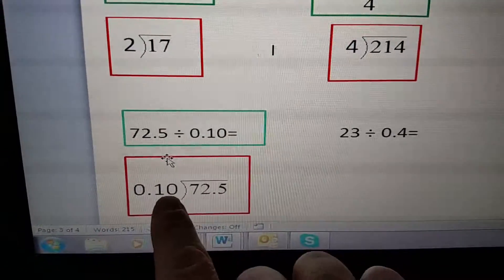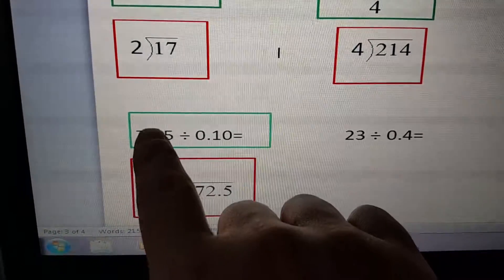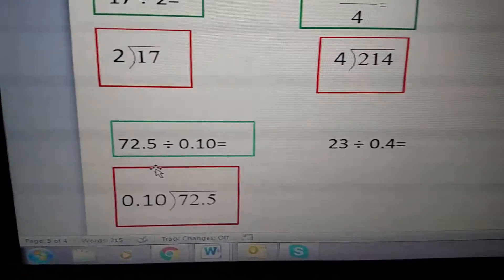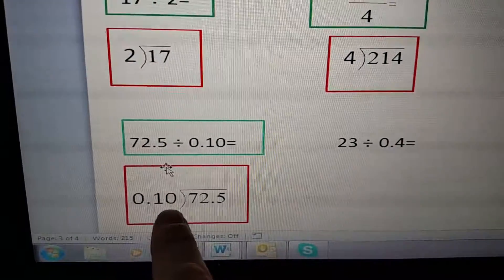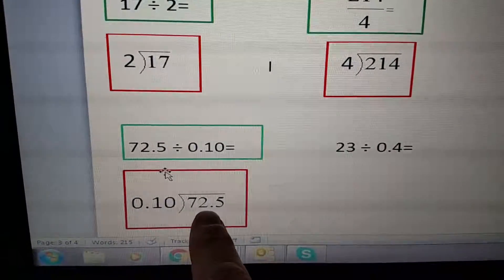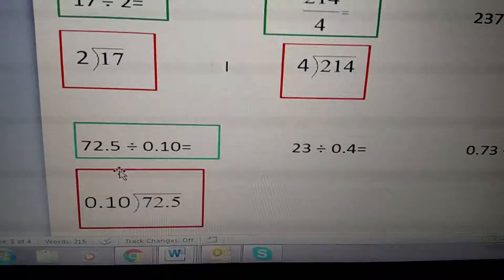So here it is, which means 72.5 goes on the inside. We're trying to figure out how many of those 0.10s are in 72.5. The rest of the problems are just like that.